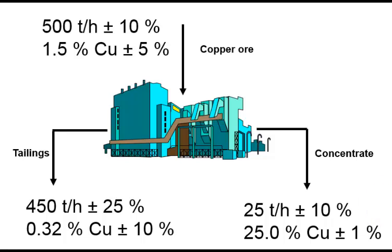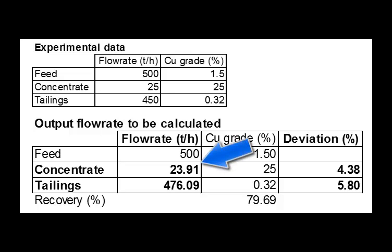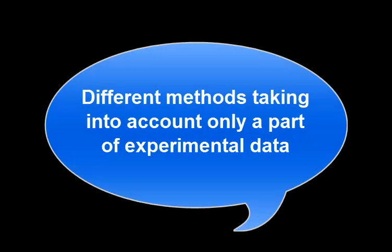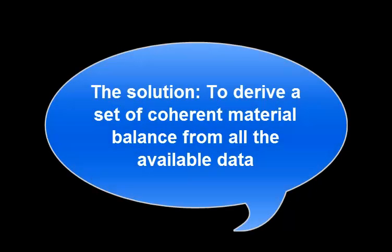Taking into account the accuracy of the copper content, one possibility is to fix one flowrate and the three copper contents and to calculate the flowrate of the two other streams. In this example, the flowrate of the two outputs are calculated and a copper recovery of 79.69% is obtained. In the same way, we can fix the flowrate of the concentrate and obtain a new copper recovery. However, these different methods take into account only a part of the available experimental data.